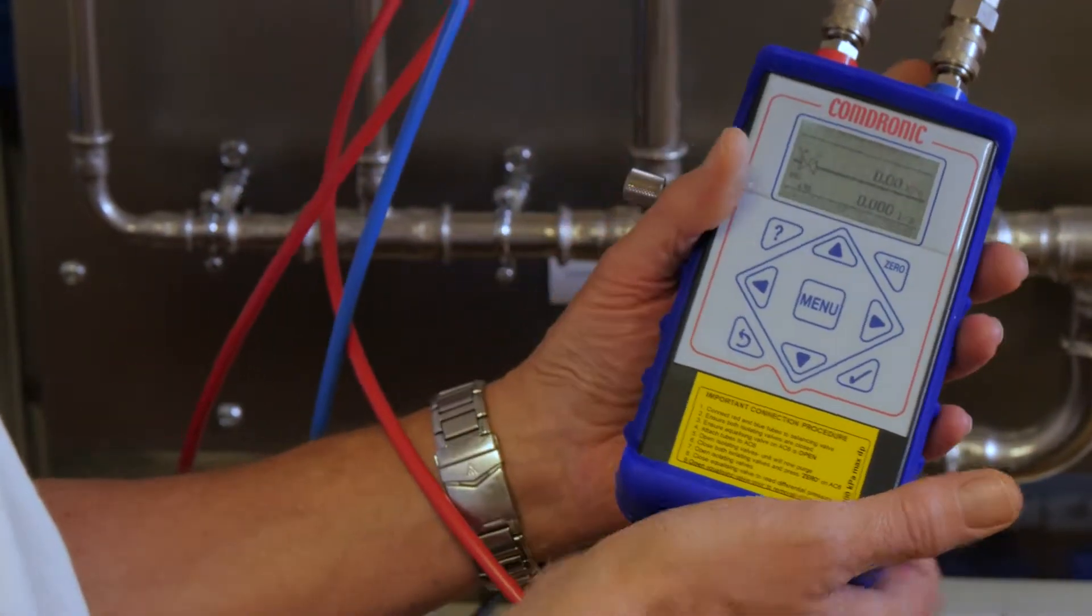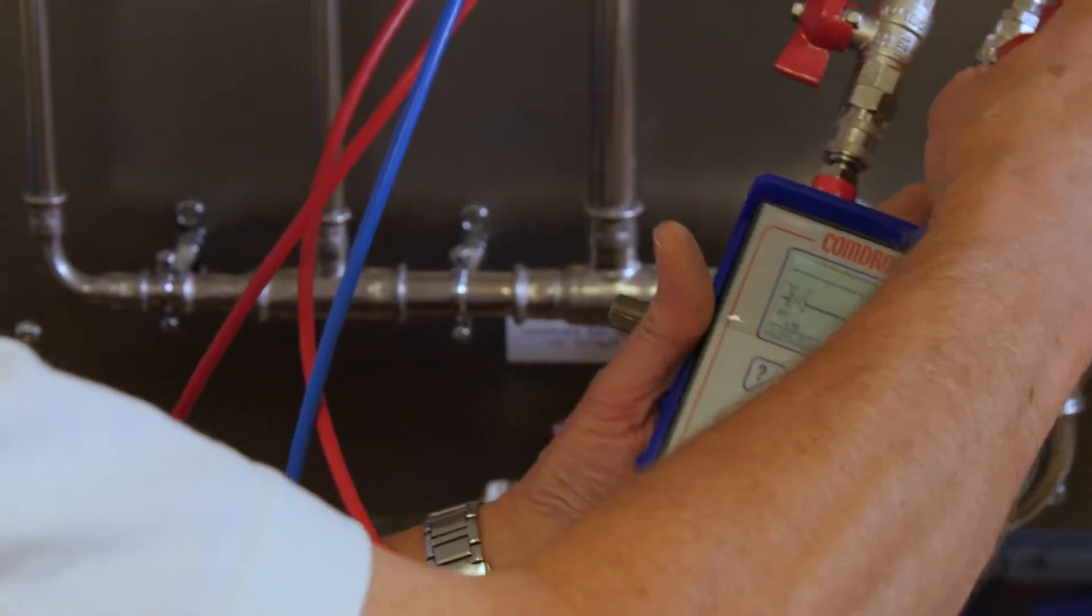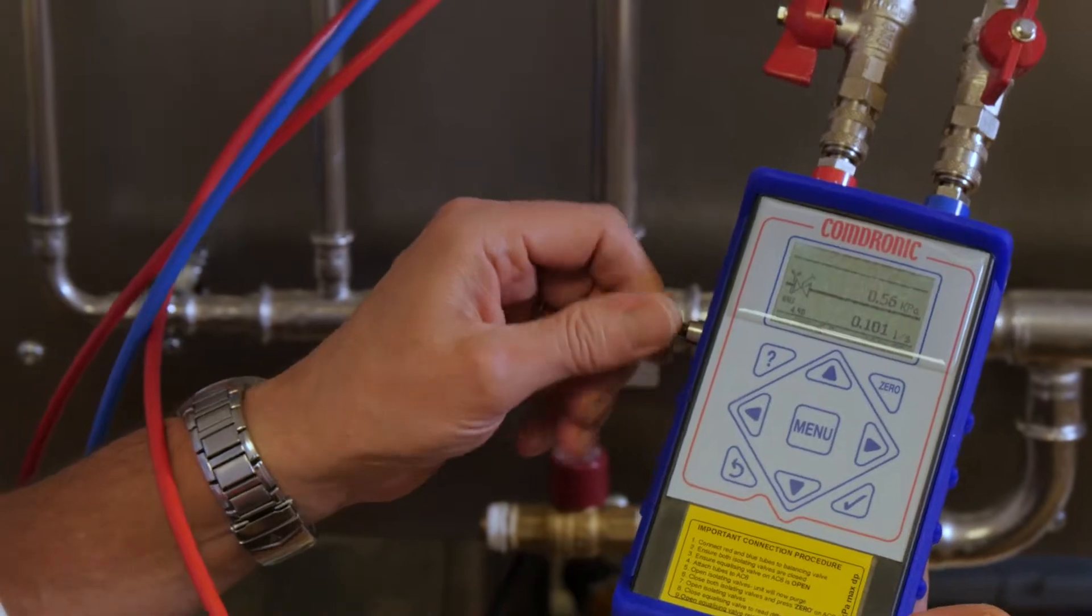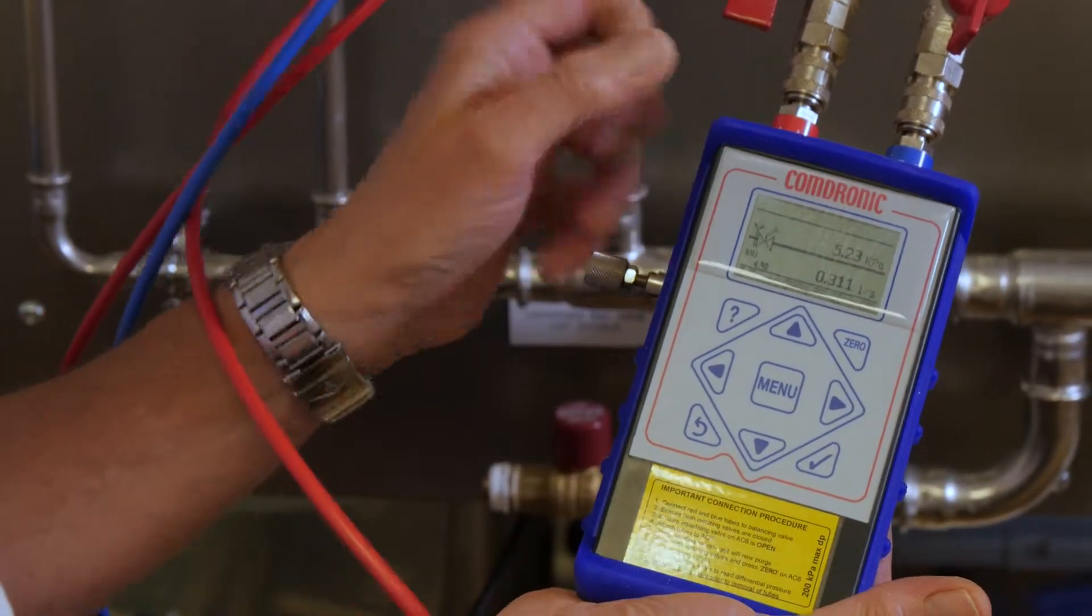We've zeroed it. Open the valves again. And then we close the equalizing valve on the side of the unit. And as we close it we'll see the differential pressure is rising.